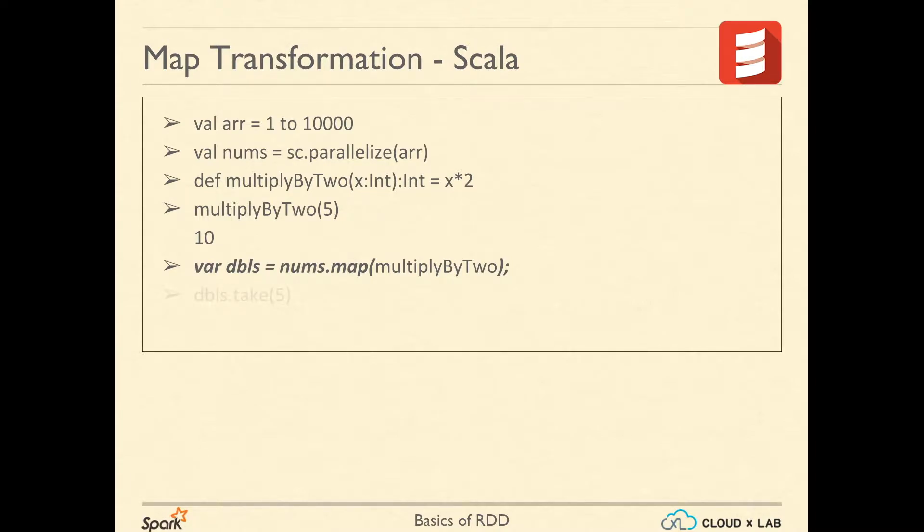Let's check first 5 records with DBLS dot take 5. You can see that DBLS contains the double of the numbers. We could also use DBLS dot collect which would bring entire array to local memory which might overflow.